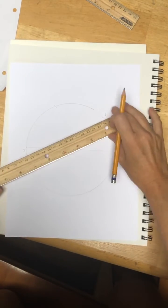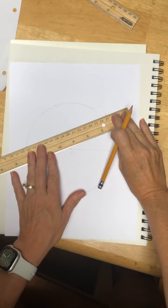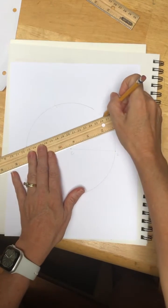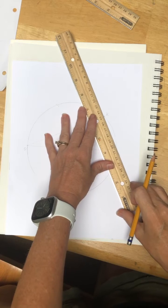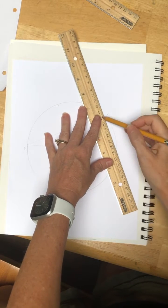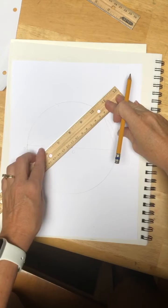Then choose any point on the circle and create a triangle. From the apex of this triangle, draw a line segment to the center, creating another radius.